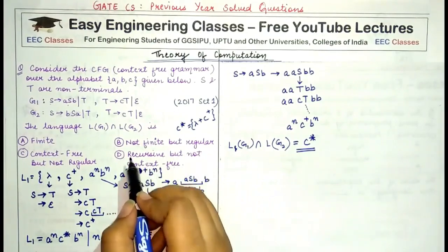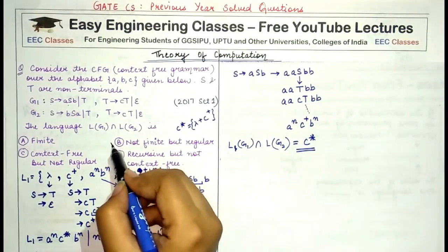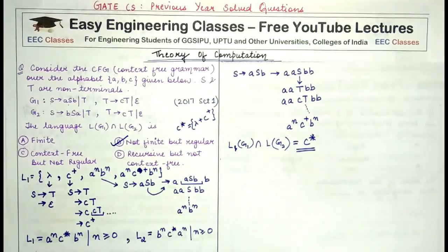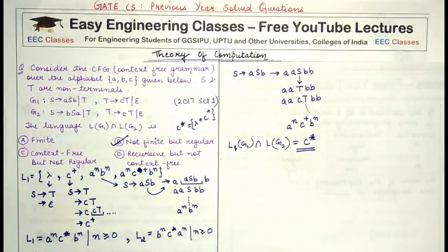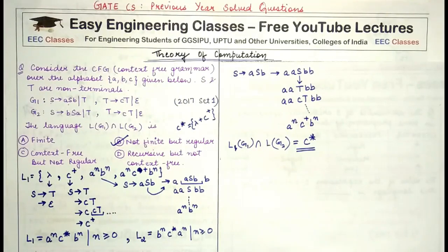So the correct answer is: not finite, but regular. The intersection of the two languages is a regular language but not finite — B is the correct answer. This question is a little tricky; you have to be careful in accommodating all strings generated by a language and then finding their intersection.